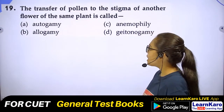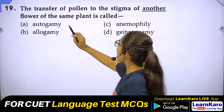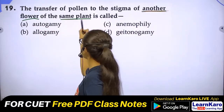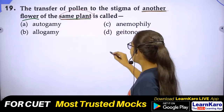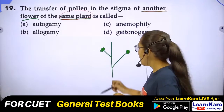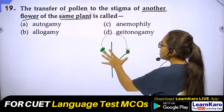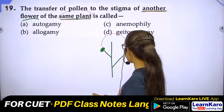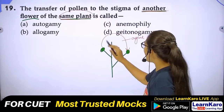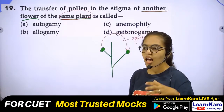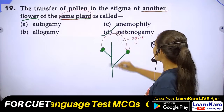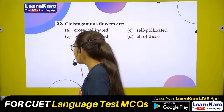Question 19: Transfer of pollen to the stigma of another flower of the same plant — what is this called? Here the pollen moves from one flower to another flower, but on the same plant. This is called geitonogamy — same plant, different flower. Correct answer: same plant, different flower.